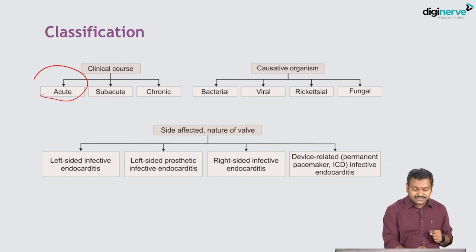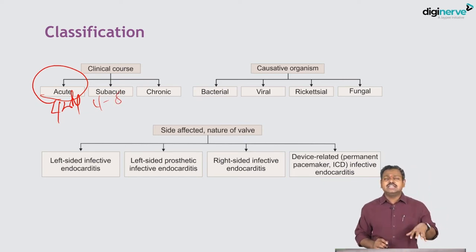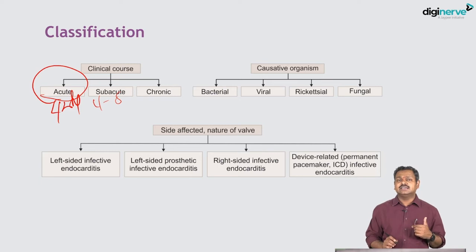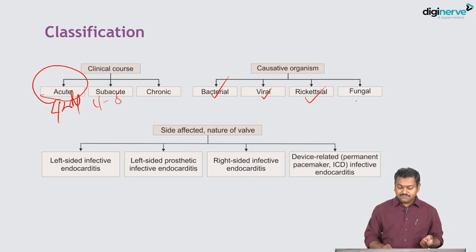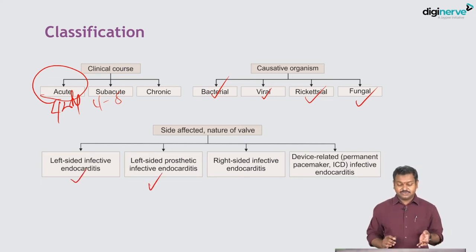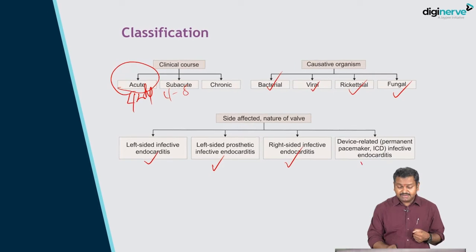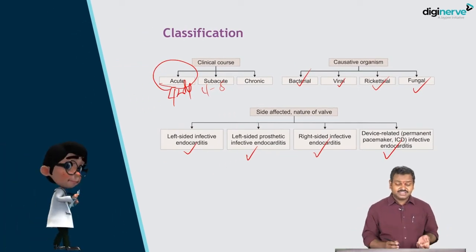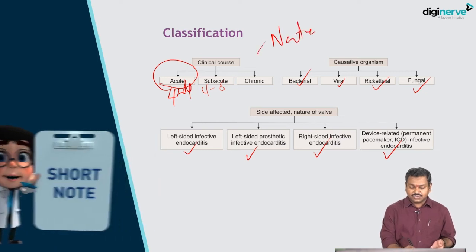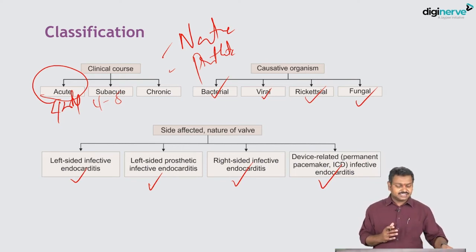Classifying infective endocarditis: by clinical course — acute bacterial endocarditis is less than four weeks, subacute is four to eight weeks, and chronic is more than two months. By organism — bacterial, viral (Coxiella/Rickettsia), or fungal (Candida). By valve type — left-sided endocarditis, prosthetic valve endocarditis, right-sided endocarditis (common in IV drug abusers), device-related endocarditis, or native valve versus prosthetic valve endocarditis.